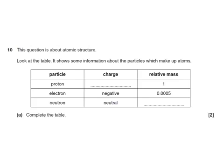And this question is also about atomic structure. Look at the table. It shows some information about the particles which make up atoms. Protons. Again, what kind of charge do they have? Protons positive, plus. And the relative mass of a neutron is the same as a proton. It weighs one.